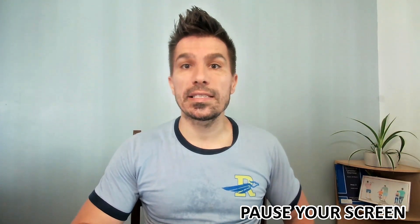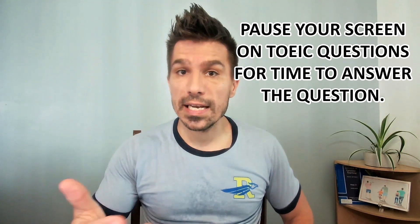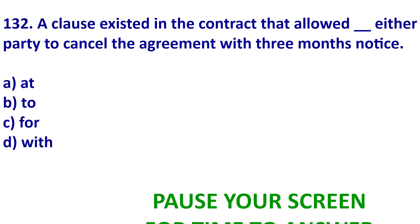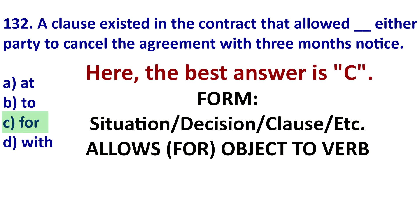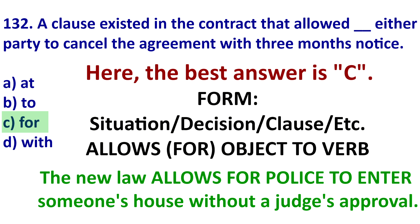Now let's get into the TOEIC questions — we're going to do five and find out how to get the answer. Question 132: the best answer is C. In formal writing, often contracts, you will often hear the form: the clause or the agreement allows for a person to verb. For example, the new law allows for police to enter someone's house without a judge's approval. In formal documents we often hear: the law, the contract, the clause allows for subject to verb.